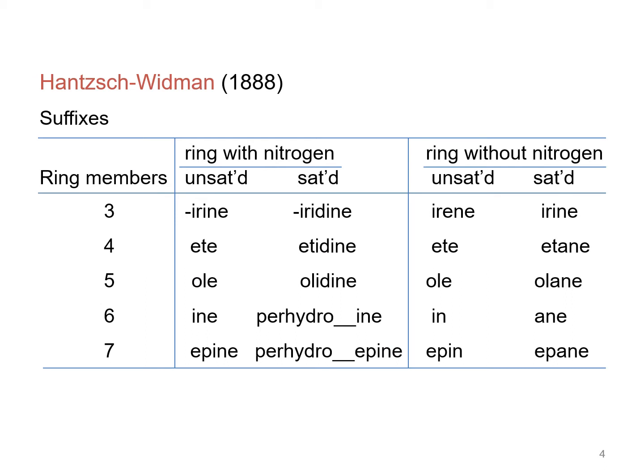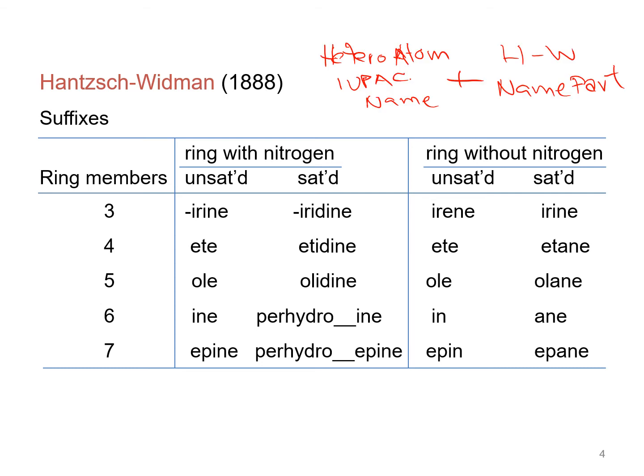There is another system for the nomenclature of heterocyclic compounds, developed by Hantzsch-Widman. According to this system, we first give the name of the hetero atom according to the IUPAC prefix, and then add a suffix according to the Hantzsch-Widman naming system. The last part of the name is determined from a table according to Hantzsch-Widman.